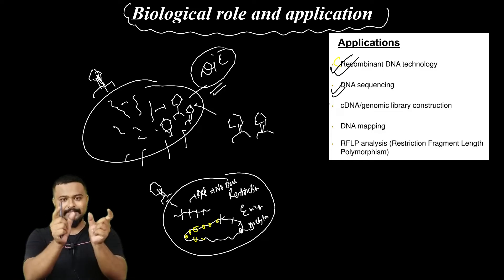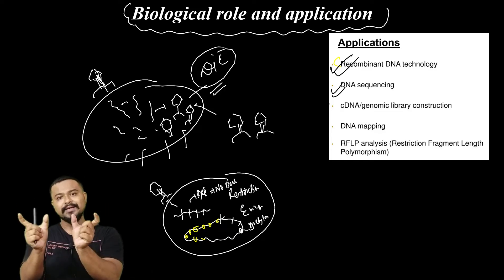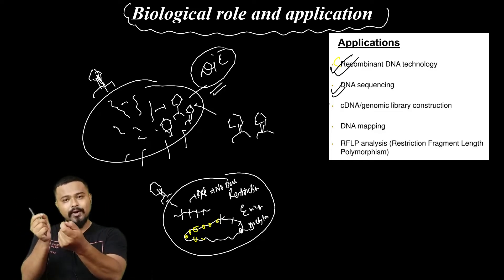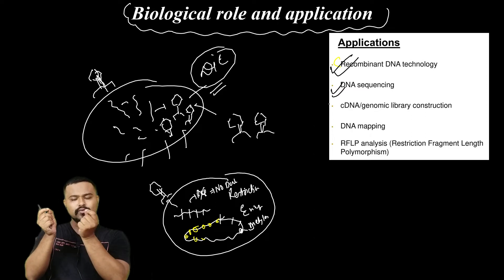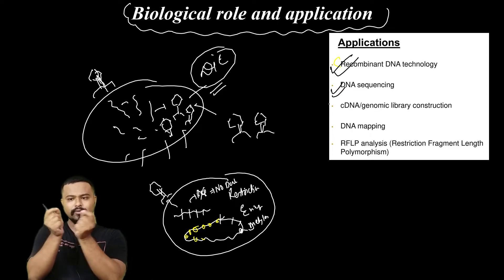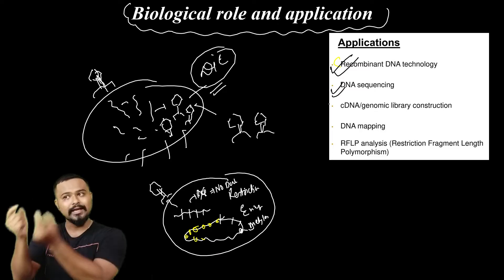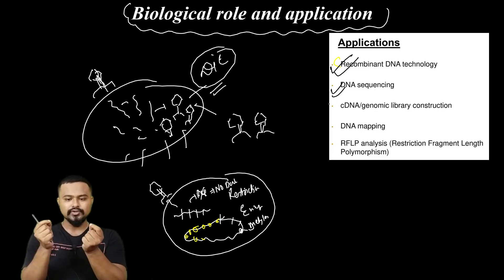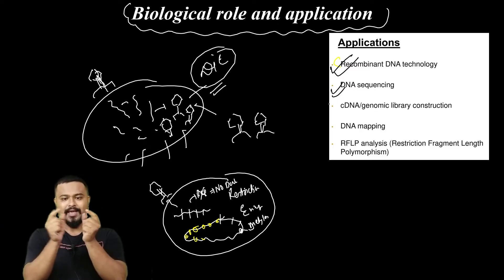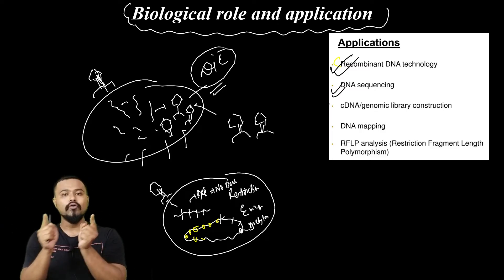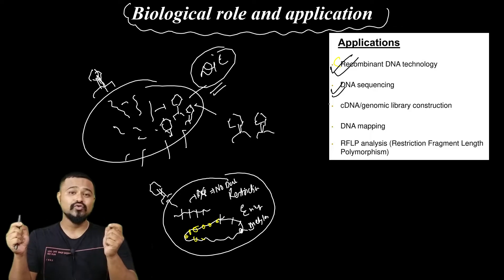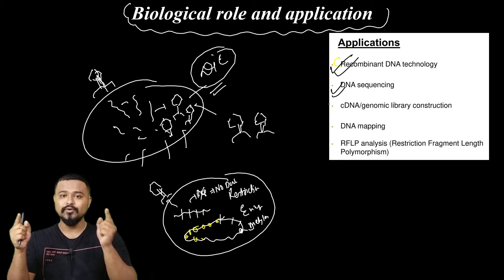DNA is used to get a whole sequence from bacteria, and I will get a sequence from that. This sequence is a collection of sequences. Finally, I will get a complete DNA sequence.